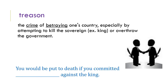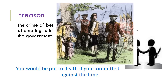Treason. Treason is the crime of betraying one's country, especially by attempting to kill the sovereign — another name for king or leader — or overthrow the government. That cartoon of two men shaking hands with swords behind their backs captures the idea: treason is stabbing your country in the back. In context, you would be put to death if you committed treason against the king. All the patriots saying 'we want America to be our own country' were committing treason. Nathan Hale was hanged because the British found evidence he was a patriot committing treason — he's known as a famous patriot who died for his country.